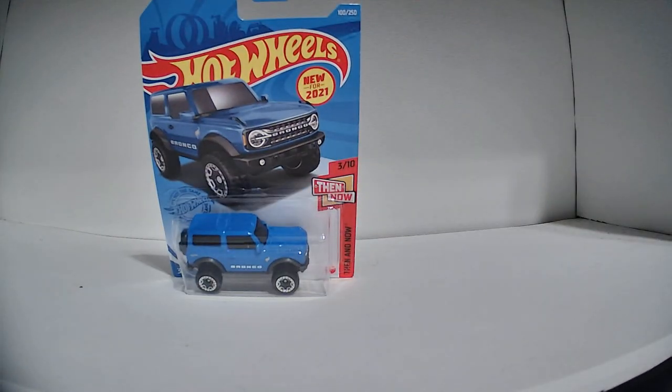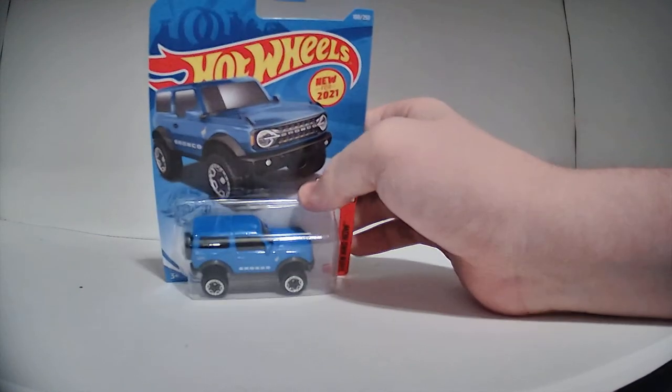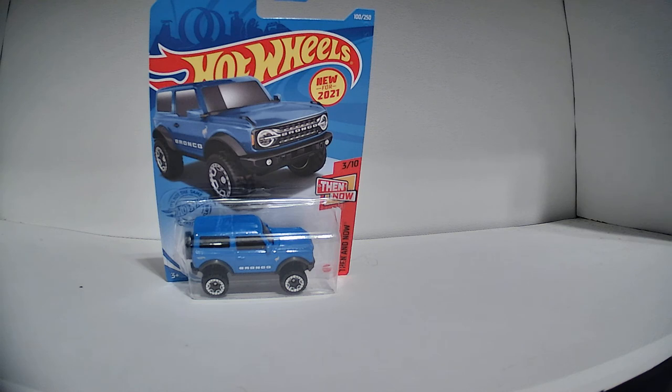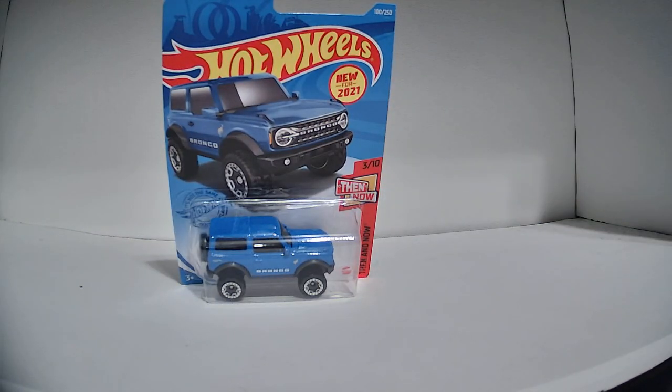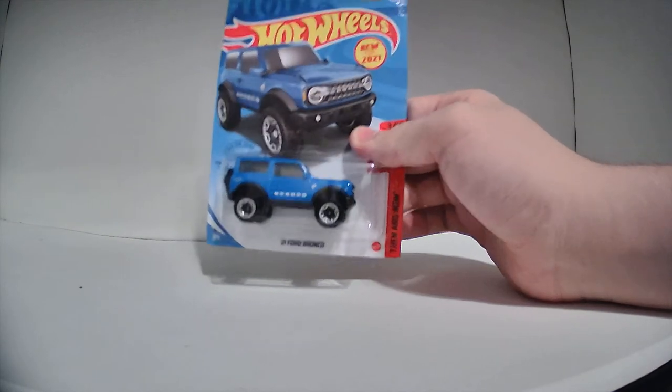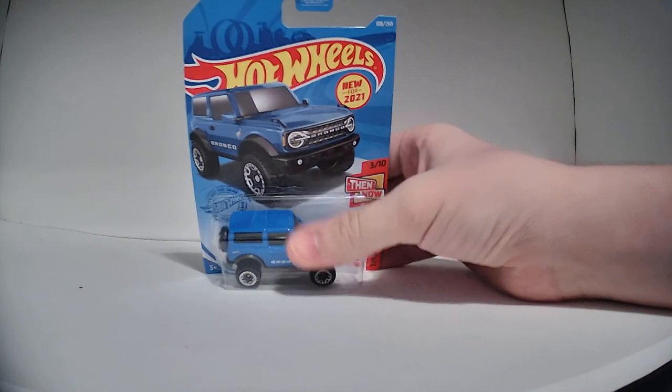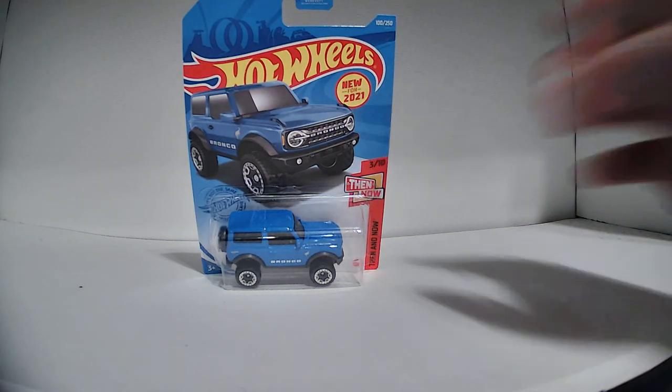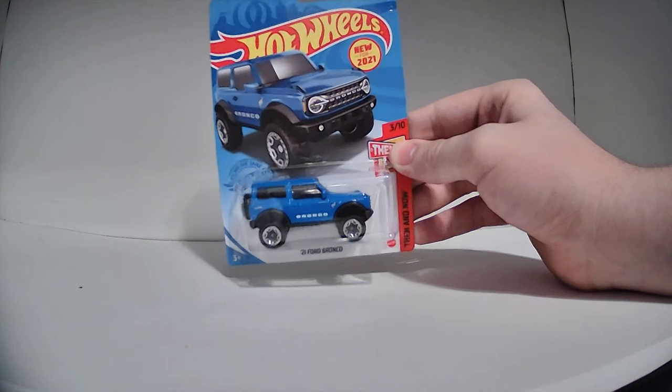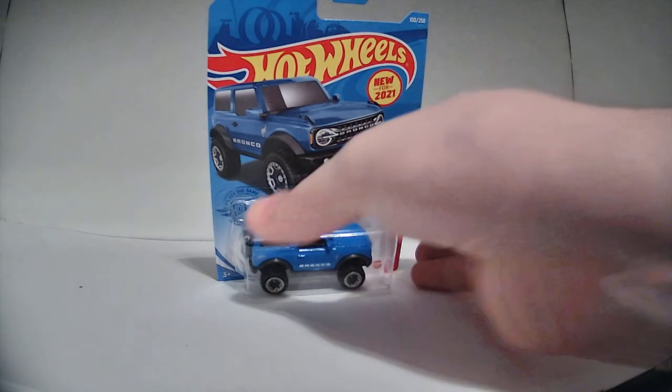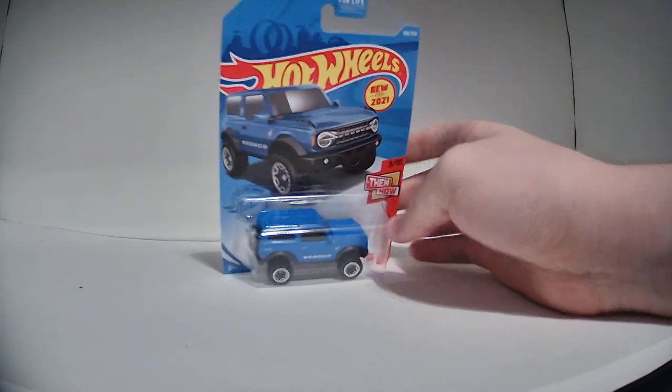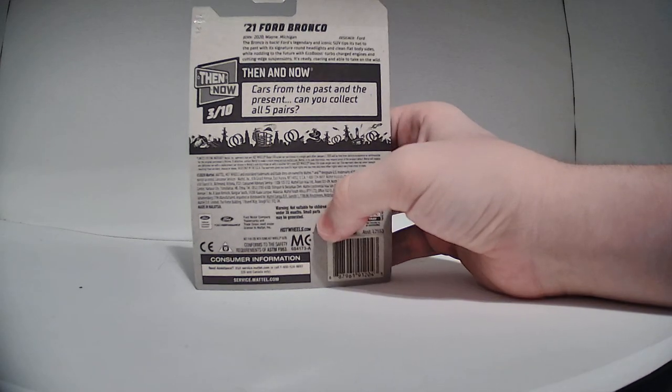21 Ford Bronco. This is a car a lot of people were anticipating because the Ford Bronco is an old truck. Last year they brought the Ford Bronco back, and I didn't think they'd make a Hot Wheels car of it so soon, but hey, they're making a Hot Wheels car of the thing the literal year it's released. And to make it cooler, it's part of Then and Now, which is a series they used to do all the time. The main gimmick is they'll release two versions of a car, the old version like a classic muscle car and then the modern version, and they'll both have the same exact paint job so you can put them side by side.